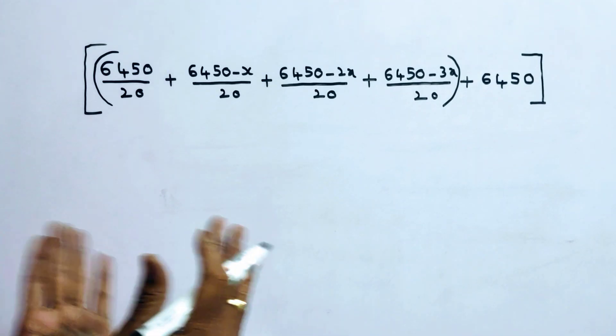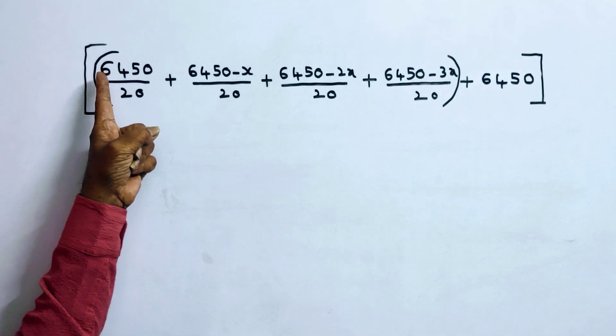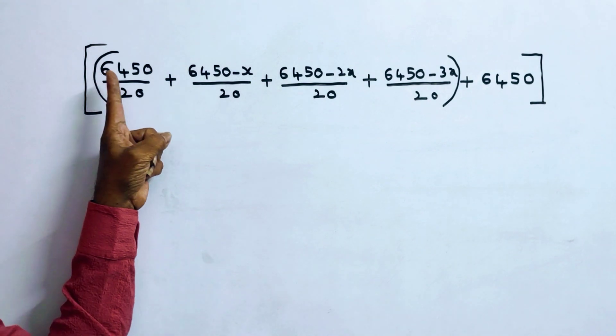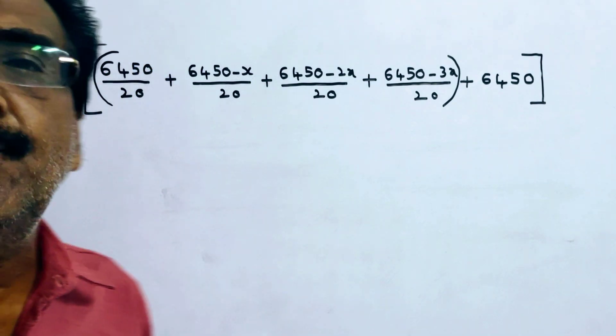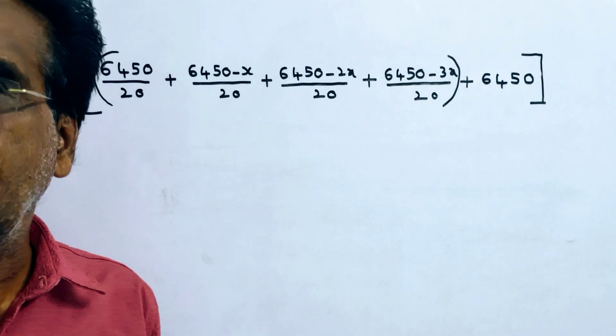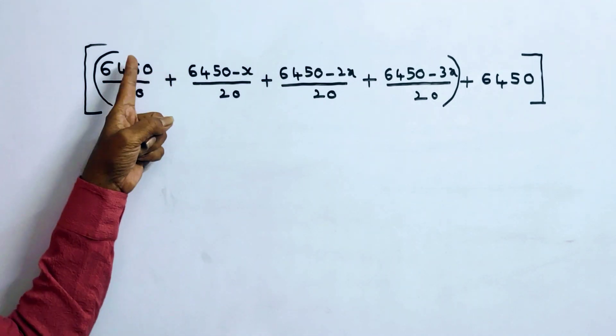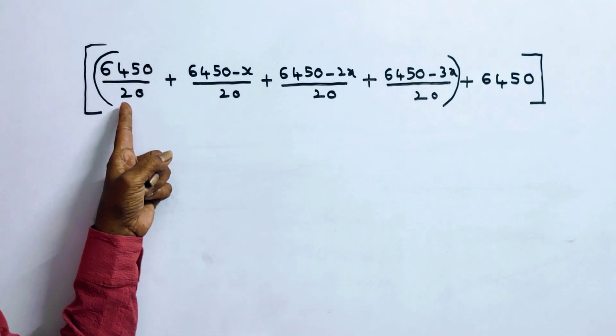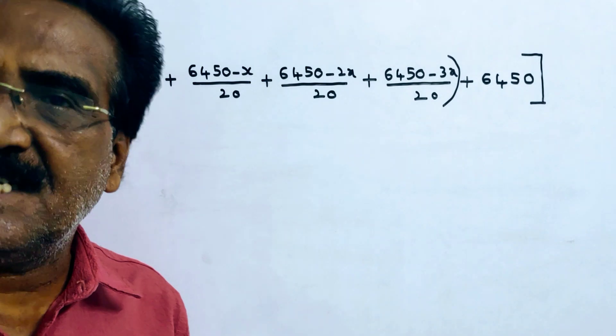For the first year, he has to pay interest on Rs. 6450. 6450 into 5%, which is 5 by 100, that is 5 by 20. So 6450 by 20. This is the interest accrued for the first year.